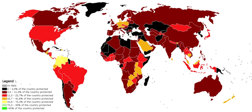Protected areas of India include national parks, wildlife sanctuaries, biosphere reserves, reserved and protected forests, conservation and community reserves, communal forests, private protected areas and conservation areas.